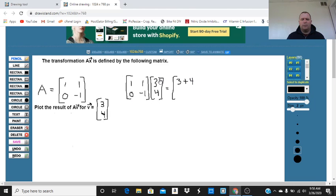And then 0 times 3 plus negative 1 times 4, or minus 4. So our resultant vector is going to be 7, negative 4.